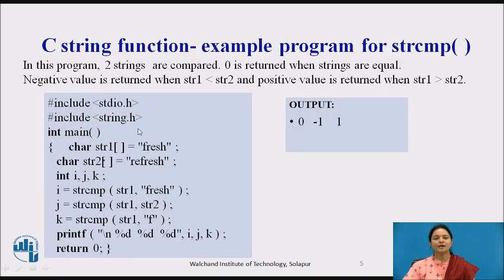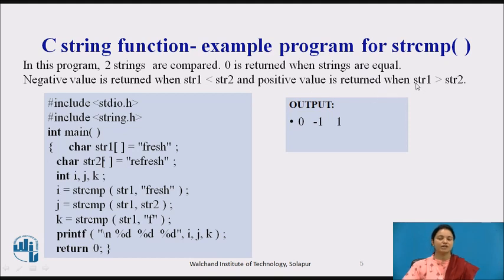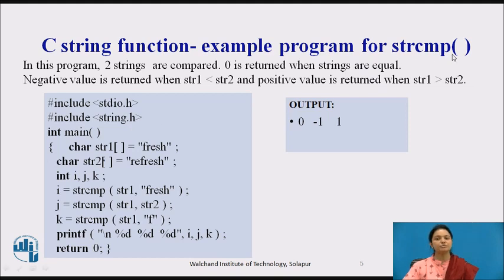Now we will see first how this works using the library function. In this program, two strings will be compared: 0 will be returned when strings are equal, a negative value when the first string is smaller, and a positive value when the first string is greater than the second. We are including stdio.h and string.h for using the strcmp library function.